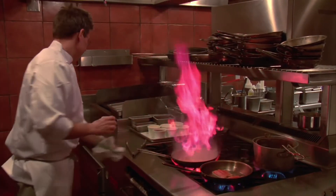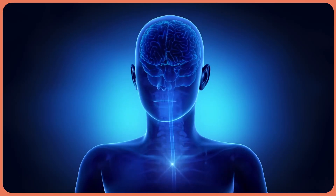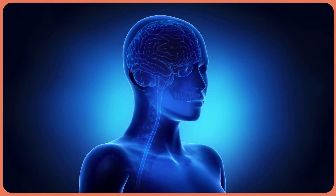When we encounter noxious stimuli, like touching a hot stove, an electrical signal is sent up a primary afferent neuron to a part of the spinal cord called the dorsal root ganglion. There, electrical current causes a release of neurotransmitters that pass the pain signal from the primary afferent neuron to a secondary excitatory neuron. There are several neurotransmitters involved in pain signaling, but the major players are glutamate and substance P. The message is then sent up the spinal cord to different parts of the brain where it's interpreted as pain.